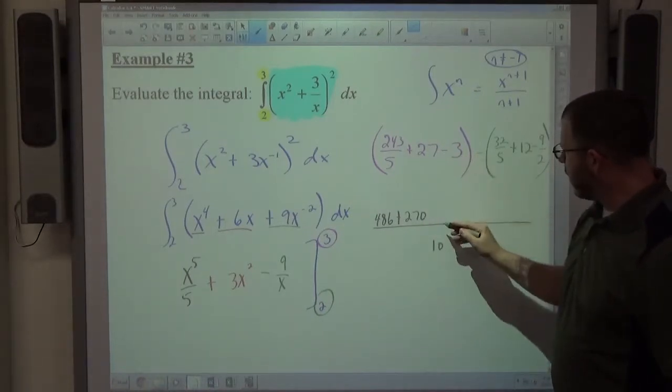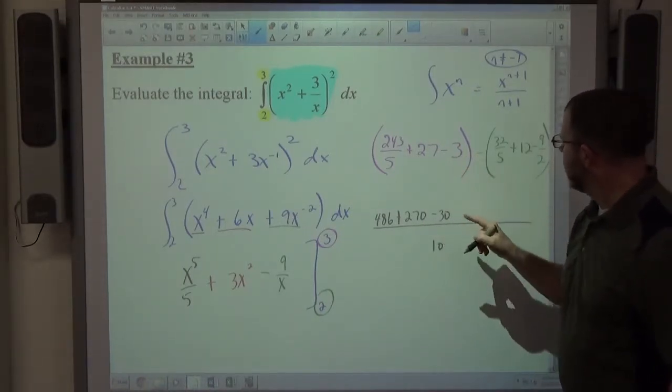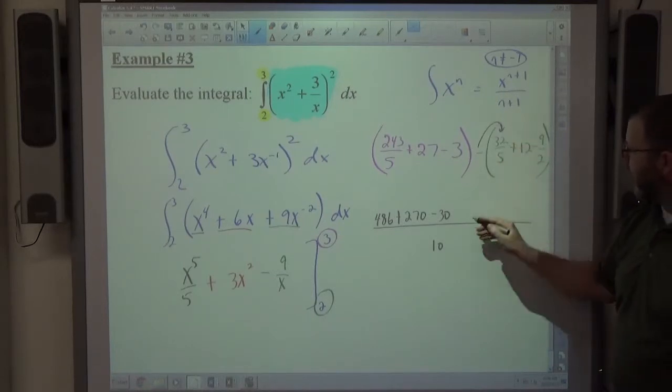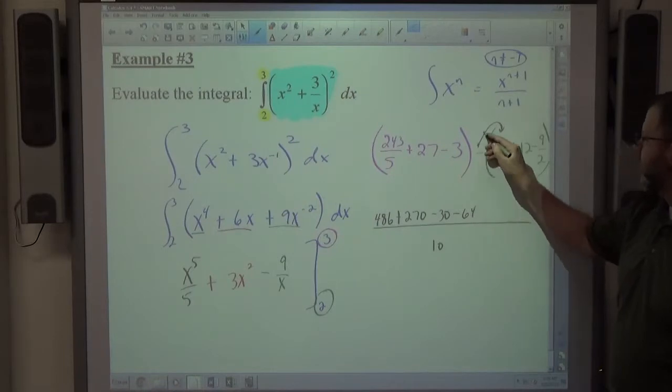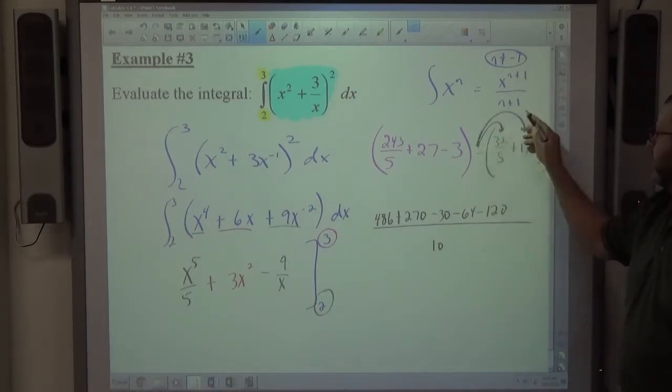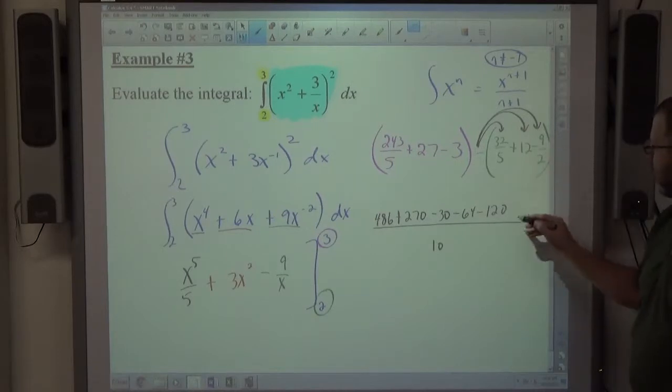Times 10 times 10 is going to be minus 30. And then this minus is distributing as I go through, so 2 times 2 is going to be minus 64, times 10 is going to be minus 120, and times 5 times 5 is going to be plus 45.